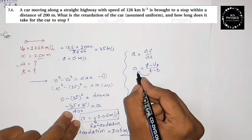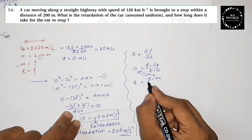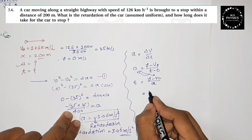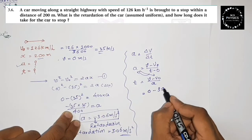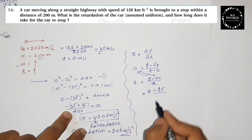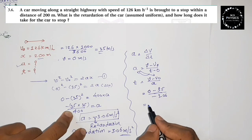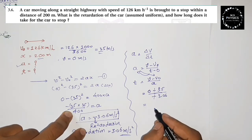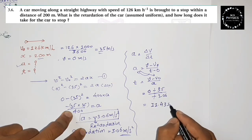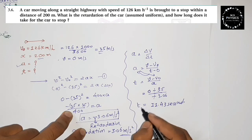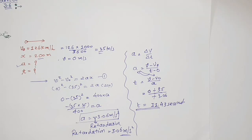So t equals (v minus v₀) divided by a. The final velocity is zero, v₀ is 35, and a is minus 3.06. The minus signs cancel to give a positive result. Do the calculation — your answer should be 11.43 seconds. Check your answer with your calculator. Take care, thank you!